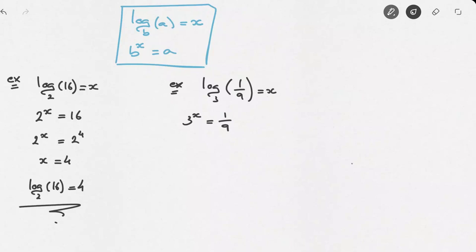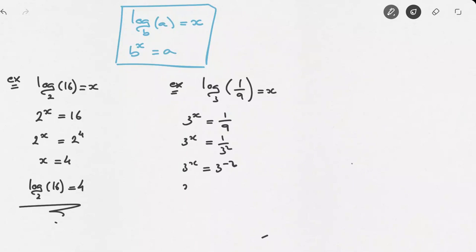Just as for the previous example, the trick here is to make sure that both sides of the equation are written as powers of the same base. We know that 9 equals to 3 squared, so we can say that 3 to the power of x equals to 1 over 3 squared. Using what we learned about negative exponents, we can write 3 to the power of x equals to 3 to the power of negative 2. Now that both sides are written as powers of 3, we can equate the exponents and say that x equals to negative 2. In other words, log base 3 of 1 over 9 equals to negative 2.